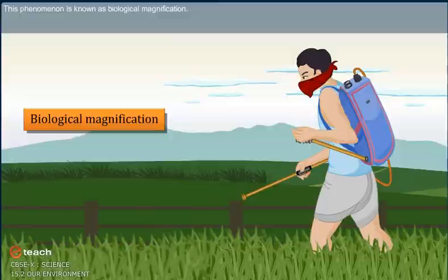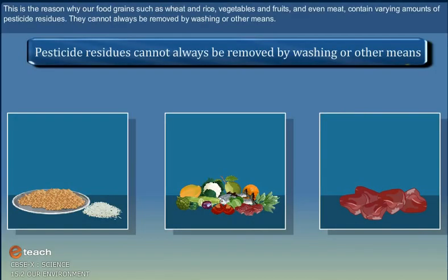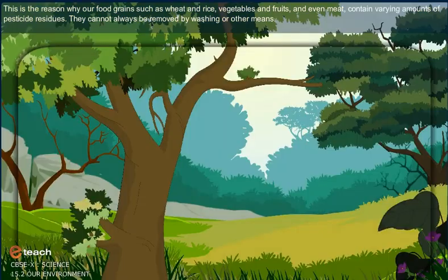This phenomenon is known as biological magnification. This is the reason why our food grains such as wheat and rice, vegetables and fruits, and even meat contain varying amounts of pesticide residues. They cannot always be removed by washing or other means.